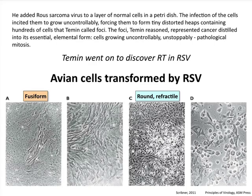He added Rous virus to a layer of normal cells in a petri dish — he took chicken cells from an embryo, made a monolayer of nice cells, and then put Rous sarcoma virus on it. The infection incited them to grow uncontrollably, forcing them to form tiny distorted heaps containing hundreds of cells that he called foci. The foci, he reasoned, represented cancer distilled into its essential form: cells growing uncontrollably, pathological mitosis. Here are pictures of avian cells transformed by Rous sarcoma virus — a transformed focus piling up on each other while the surrounding monolayer is normal, with cells touching and stopped growing.